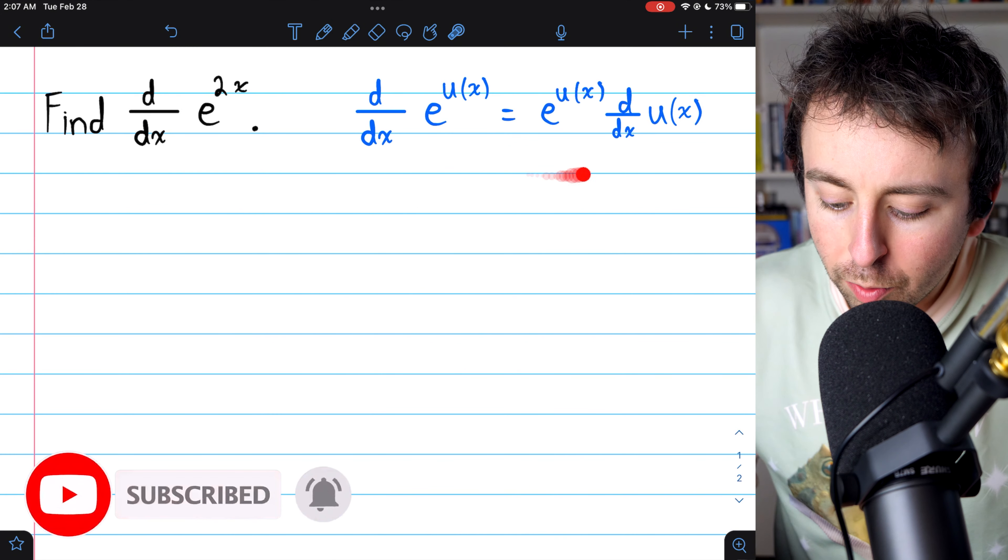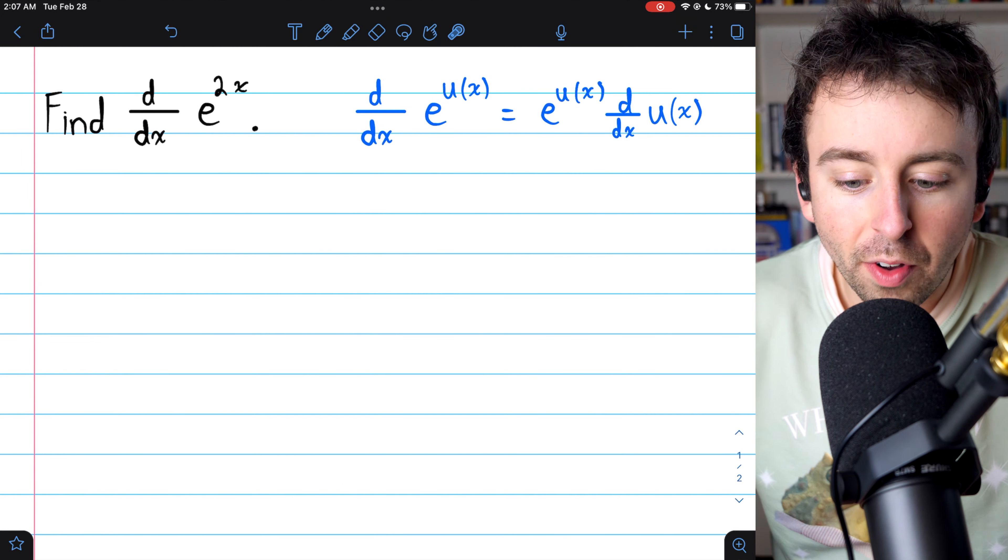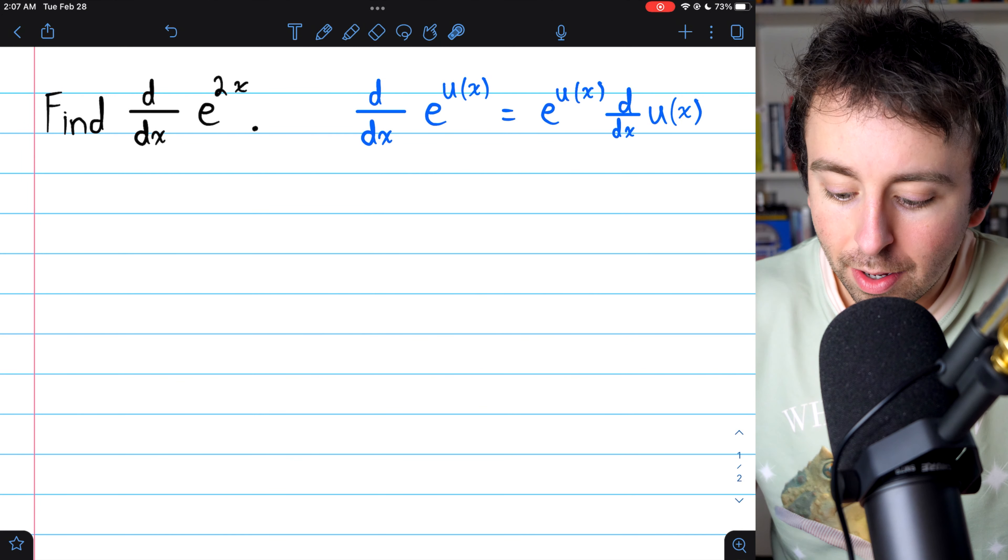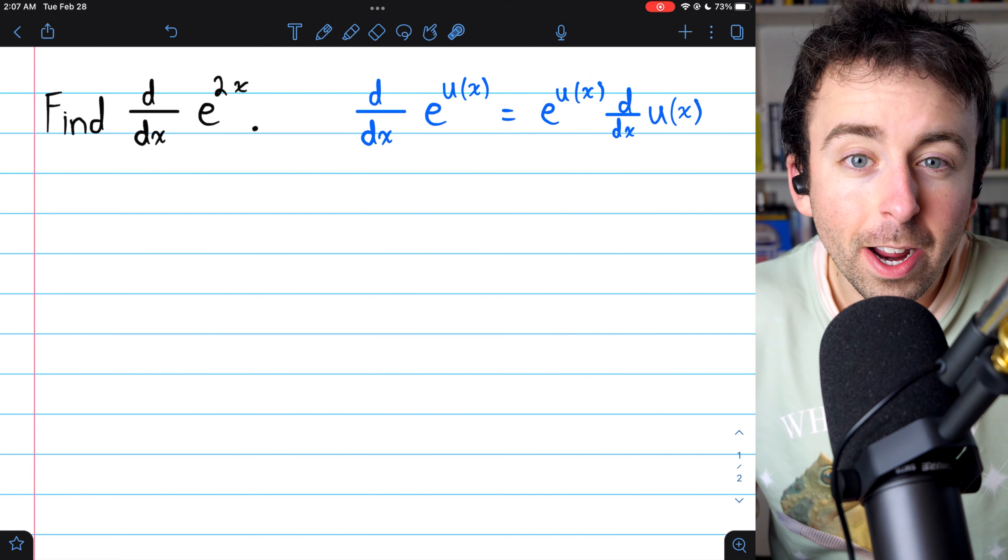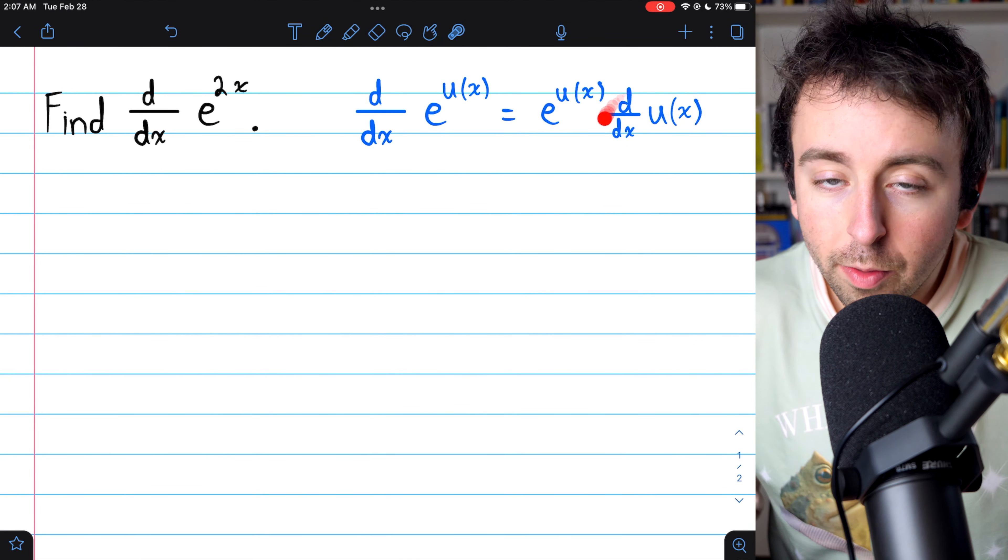Here, I've written the general formula for the derivative of e to the power of some function, say u of x. Its derivative is simply e to that function, right? It stays the same, but then you need to multiply by the derivative of that function.